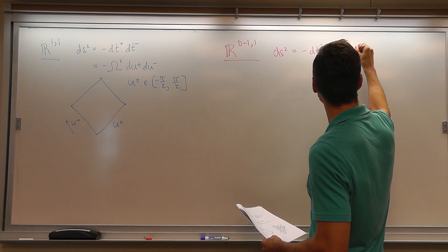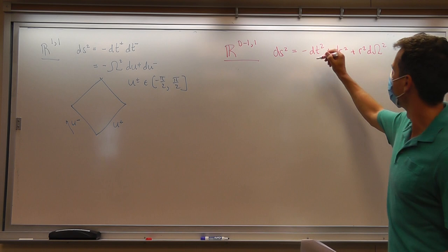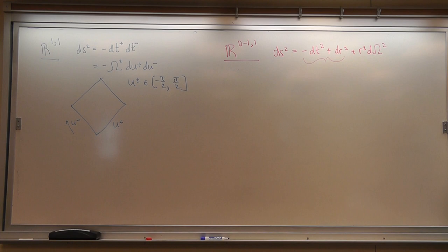In spherical coordinates, the metric is minus dt squared plus dr squared plus r squared d omega squared. We do exactly the same thing as before in the t-r direction.